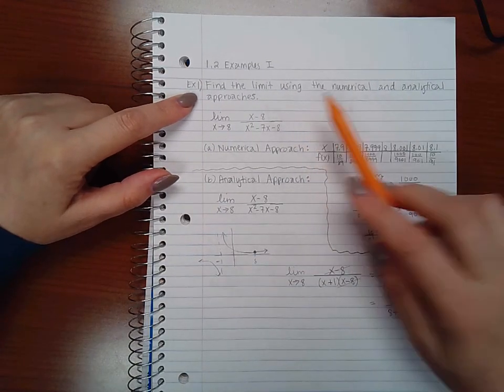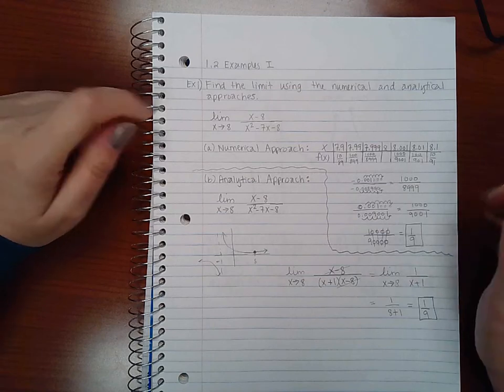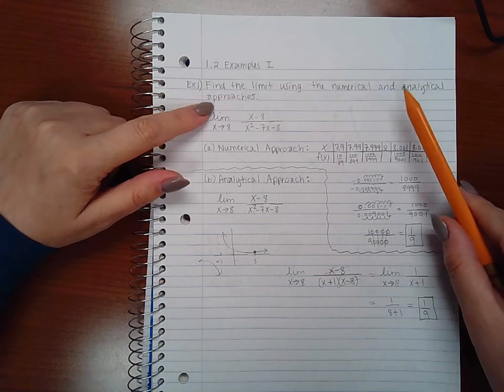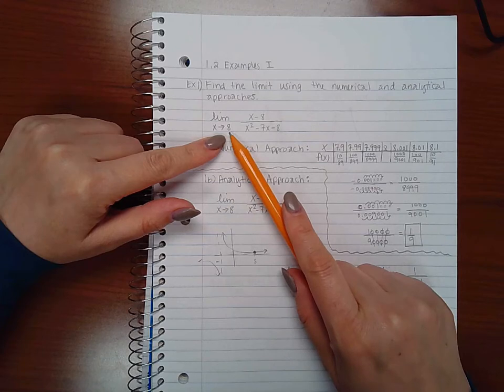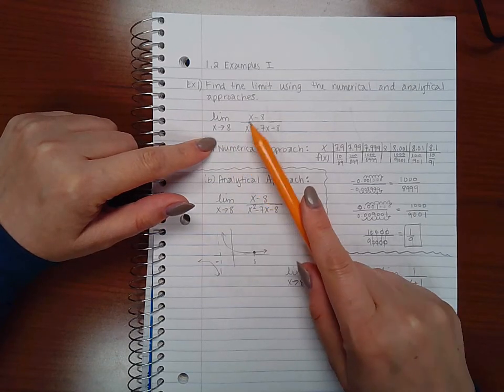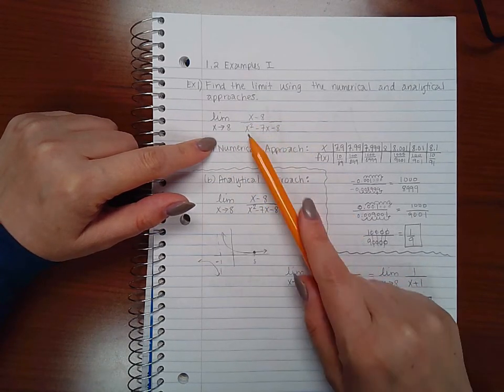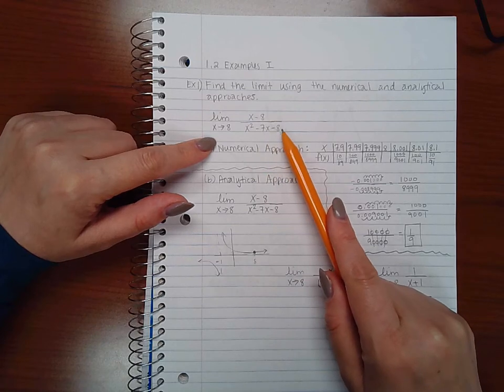So this is the first example of section 1.2 and it says find the limit using numerical and analytical approaches. The limit is the limit as x approaches 8 of (x - 8) over (x² - 7x - 8).